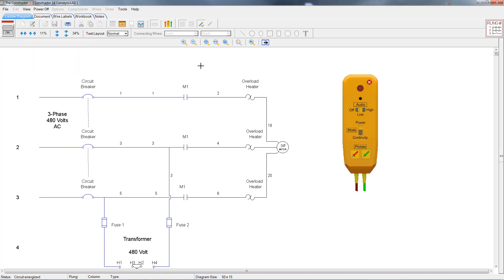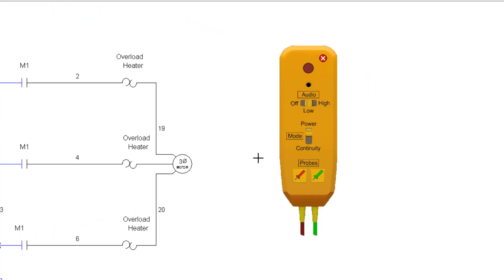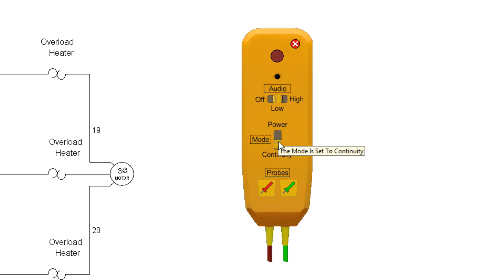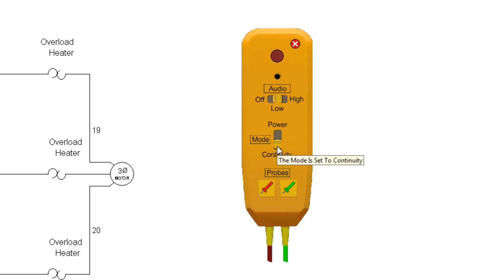To select the mode for the test probe, simply click on the button to select between power and continuity. We'll leave it in continuity for now. You can also change the audio level by clicking on that button as well.